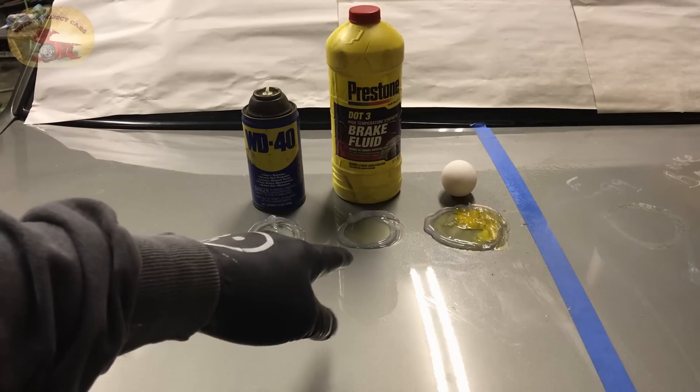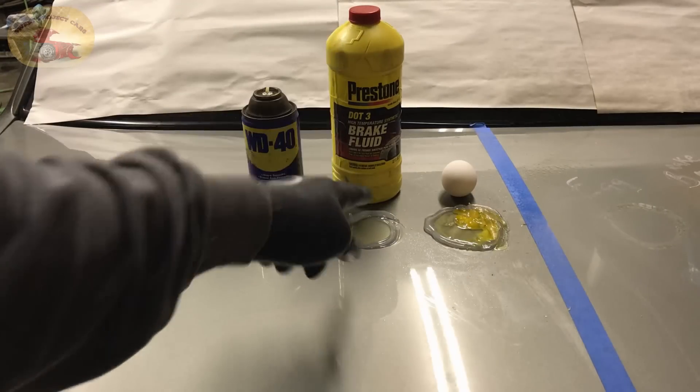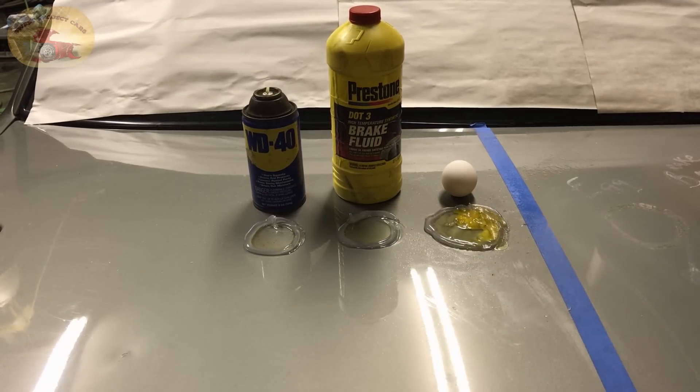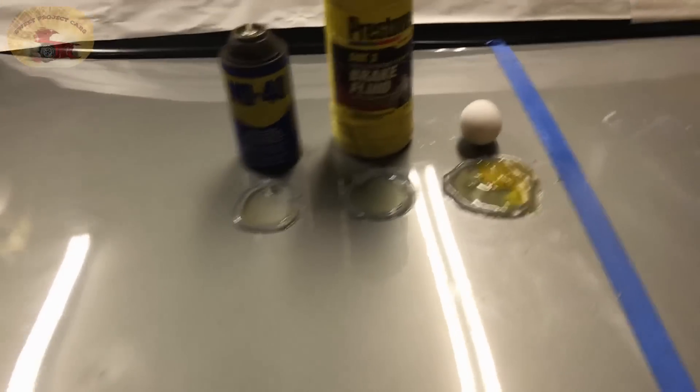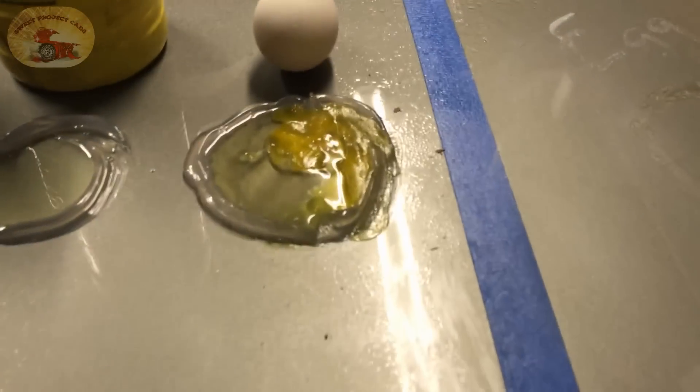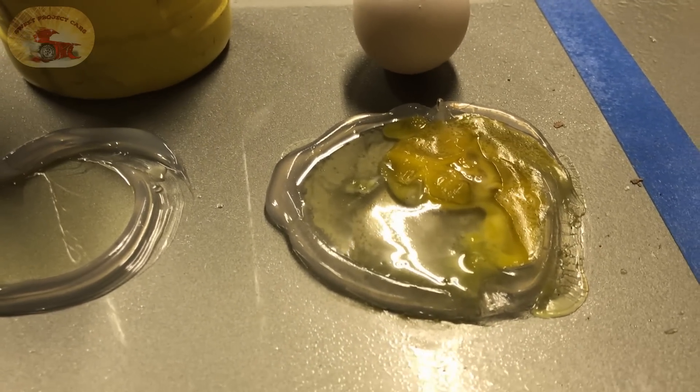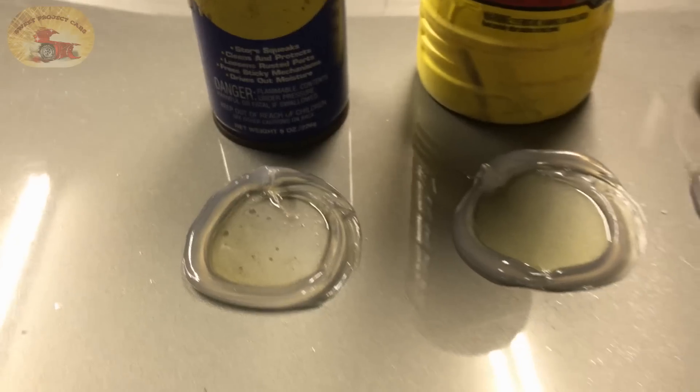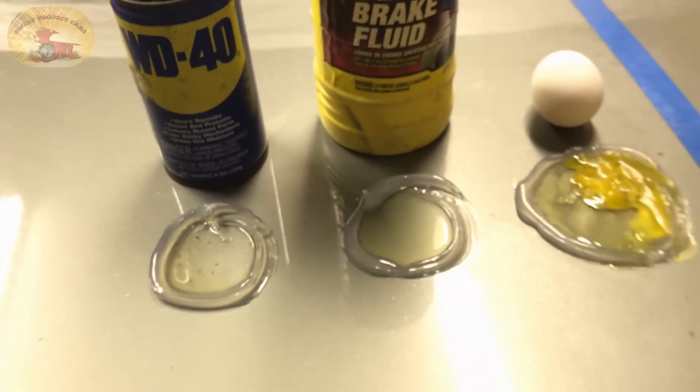All right, we'll see you in 24 hours. All right guys and gals, the ceramic coated side is ready to be cleaned off. We have our egg, brake fluid, and WD-40, and you can see the egg is looking mighty nasty there. It's been quite a few hours dried up and starting to look bad, so let's take that off there and see where we're at.